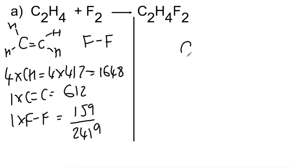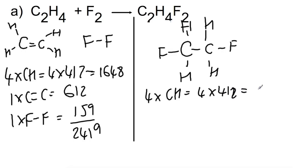And then our product, when we've added the fluorine to the ethane, is this here. So we've made four C-H bonds. So that's four times 412, which is 1648. We've made one single carbon to carbon bond, which is worth 348.